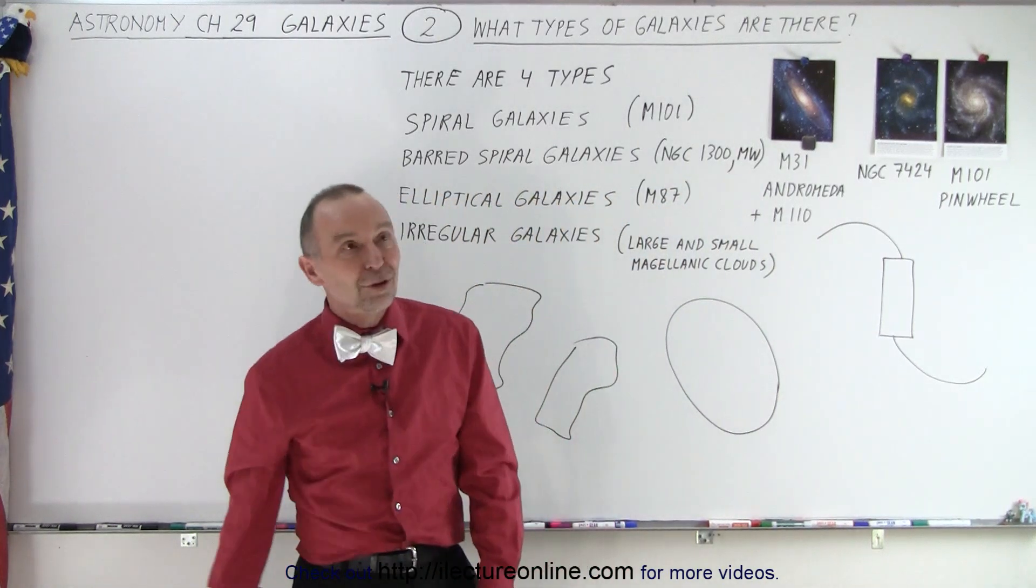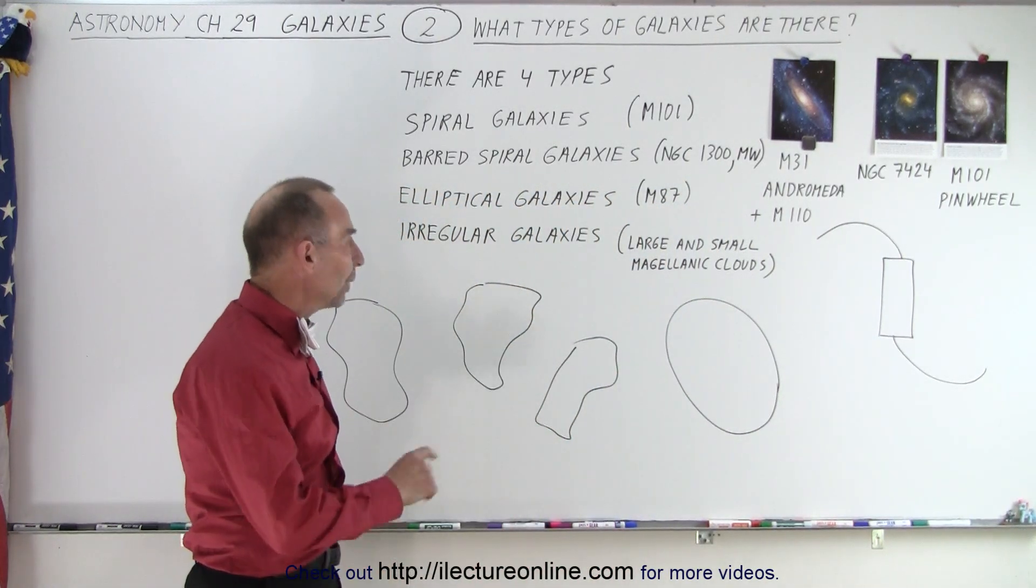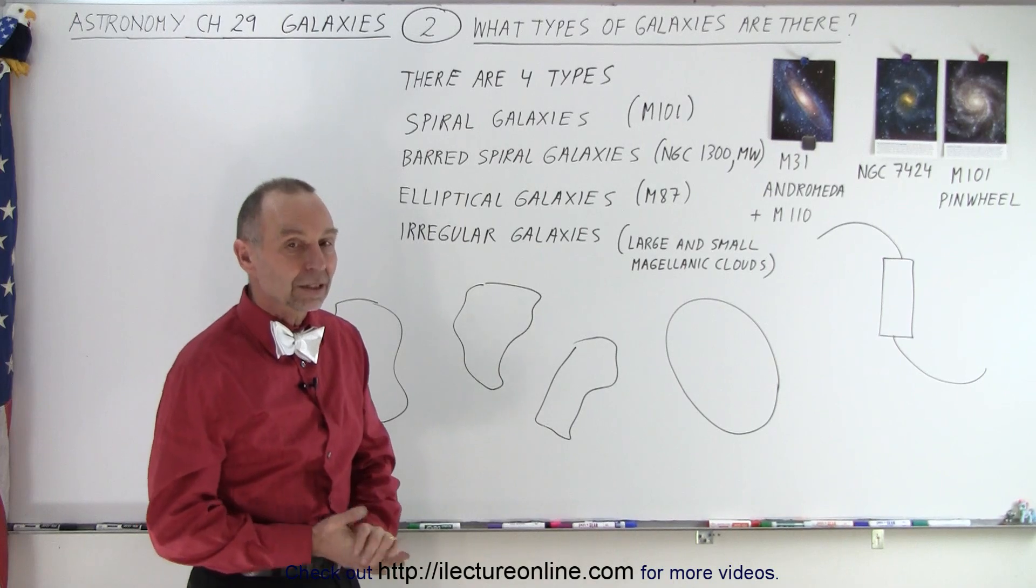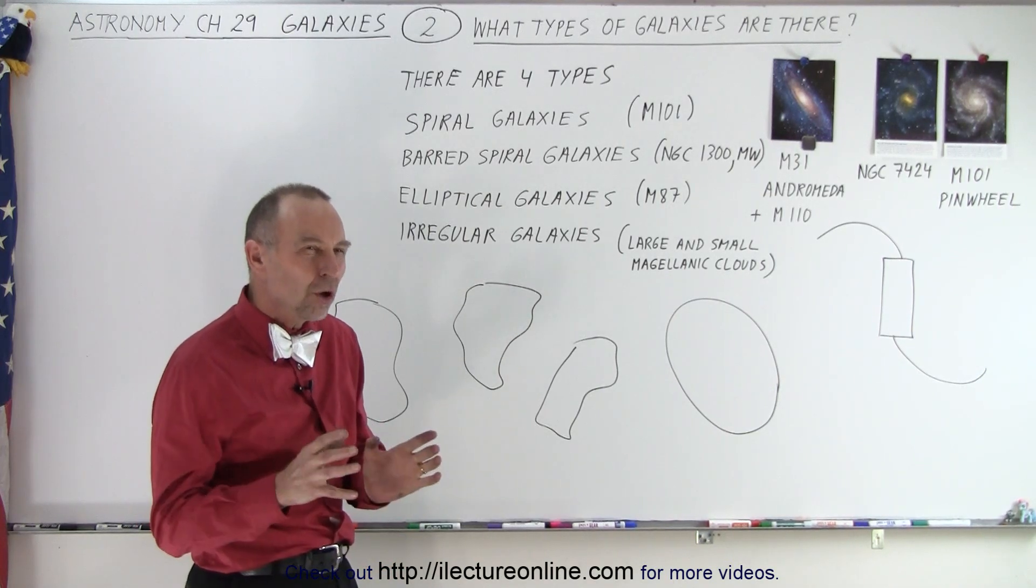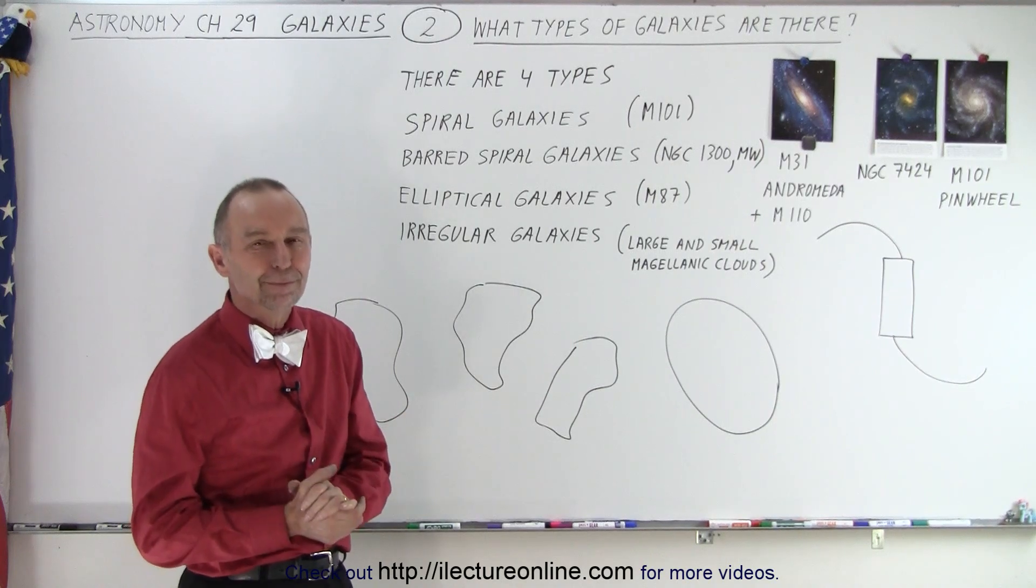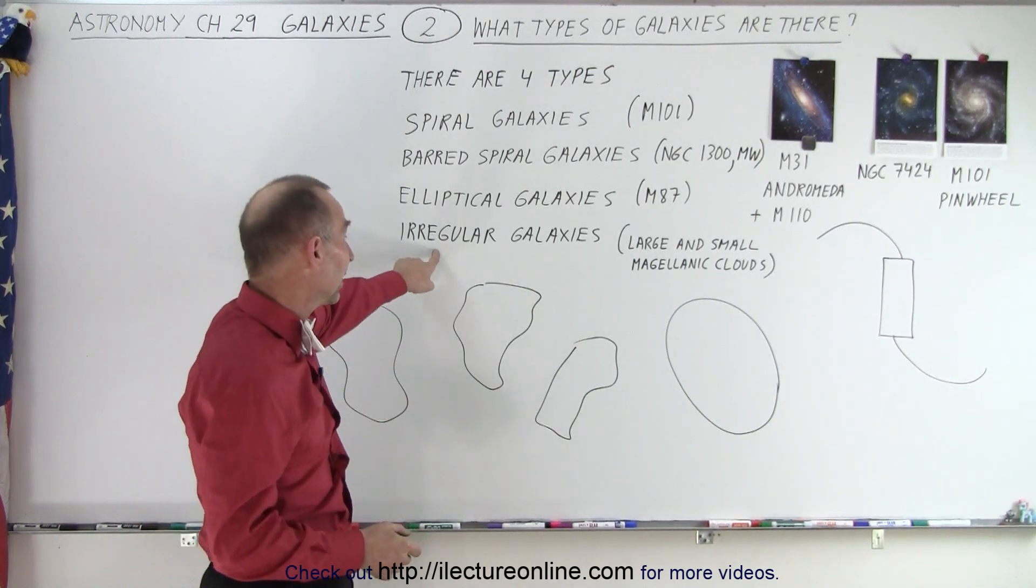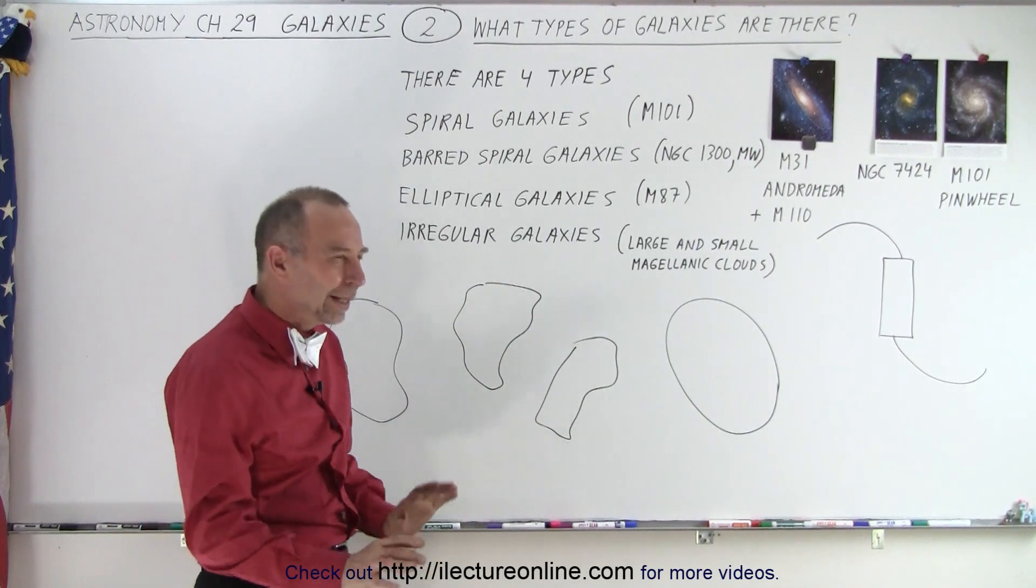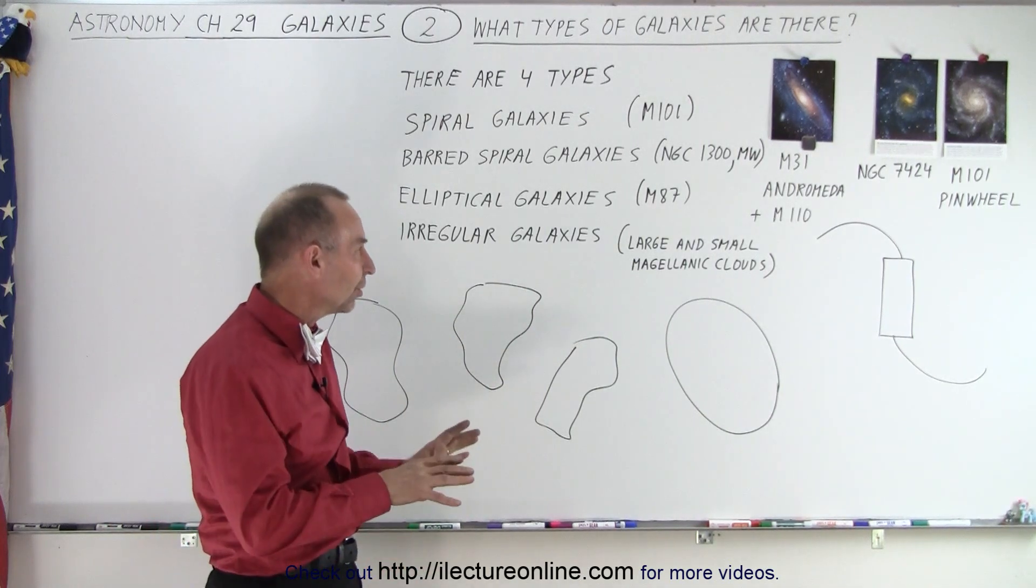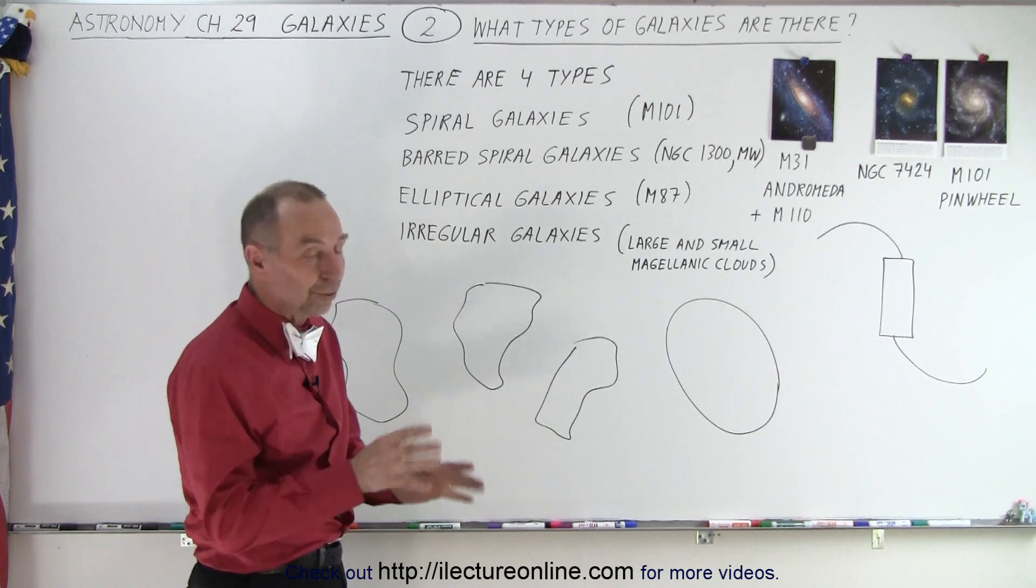It turns out we believe that the ellipticals and irregulars are the most common galaxies, although the irregulars tend to be small, so it's more difficult to see them. So we get the feel that there's more ellipticals and irregulars than there are spiral galaxies.